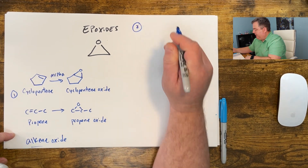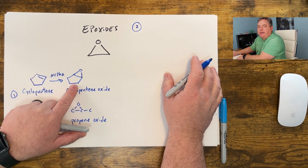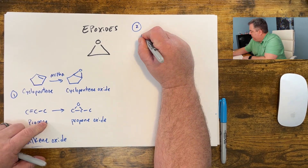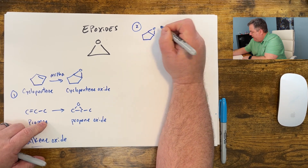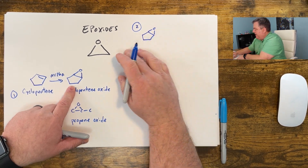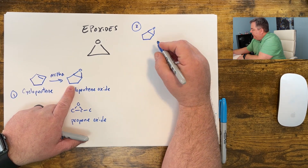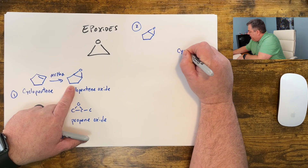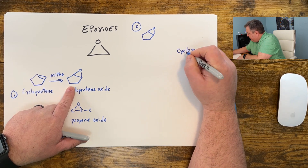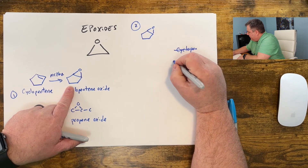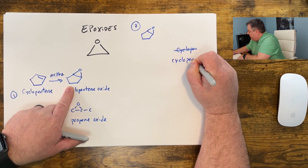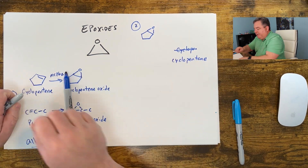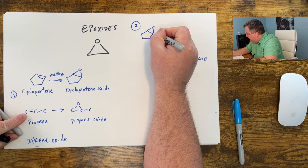The second way you can name epoxy compounds is by naming the epoxide as a substituent to the ring. Taking this same compound with this new way: you take the longest carbon chain, the base chain. We'd have cyclopentane — there are five carbons there — so that names the ring, the cyclopentane.